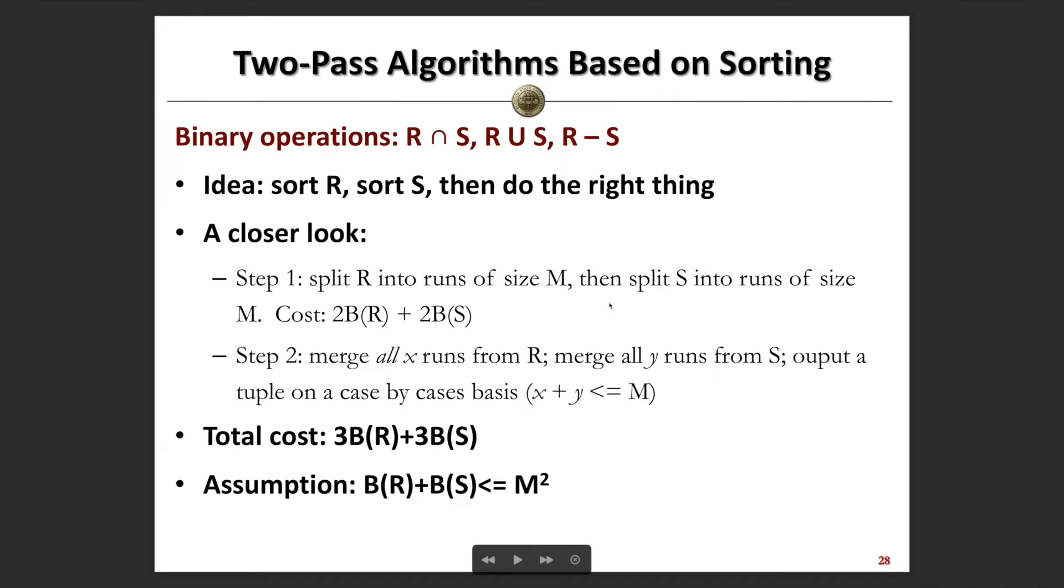Similarly for S, we split S into runs of size M and load it into memory. The cost for step 1 will be about 2B(R) + 2B(S), because we have to load all the blocks in both R and S into memory to do the sorting and rewrite the sorting results.